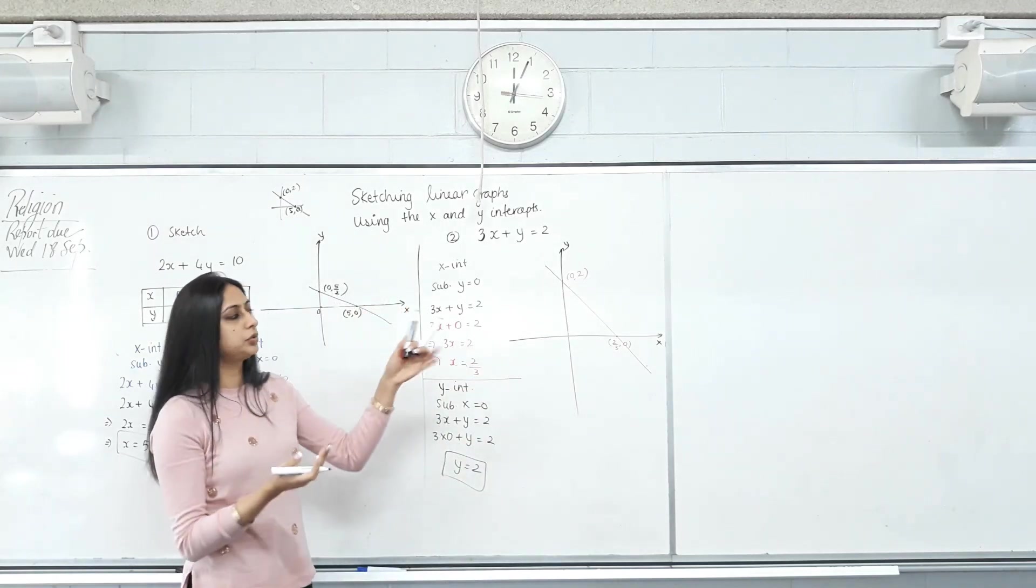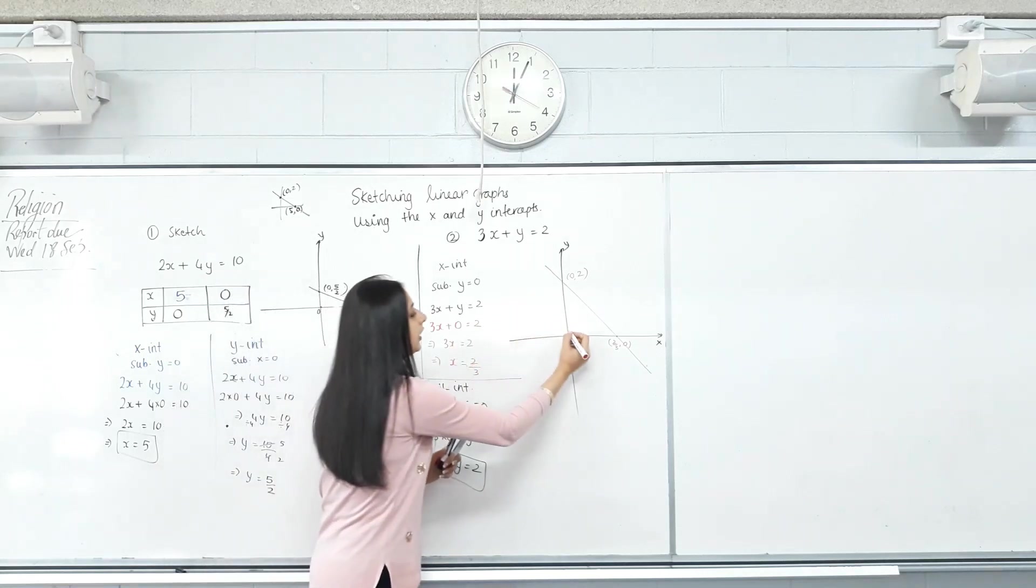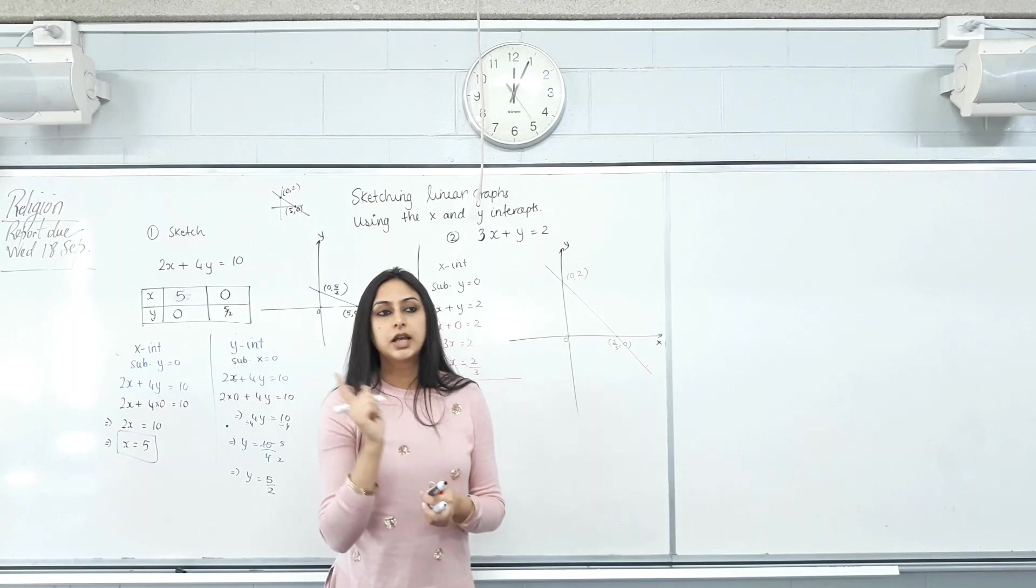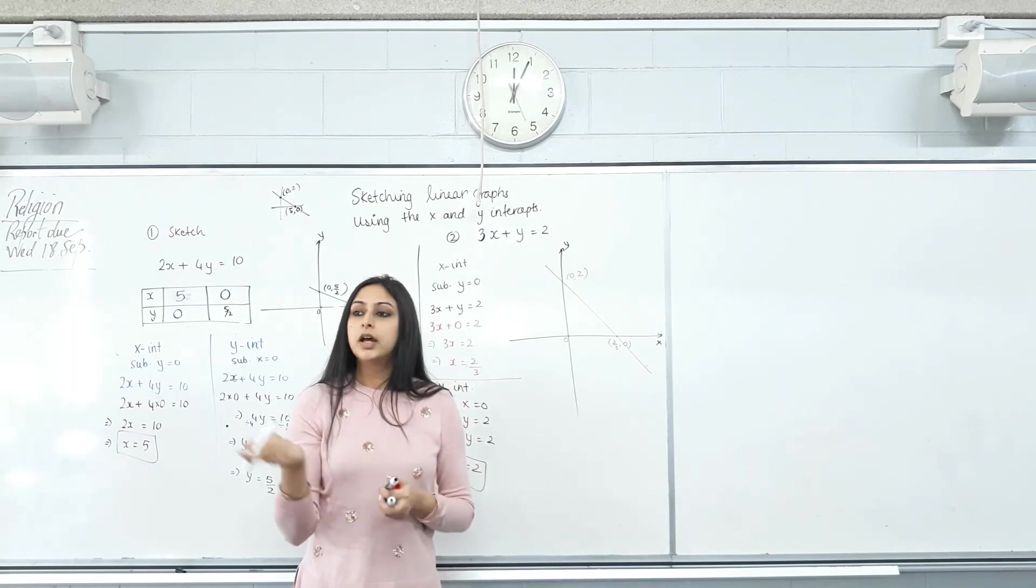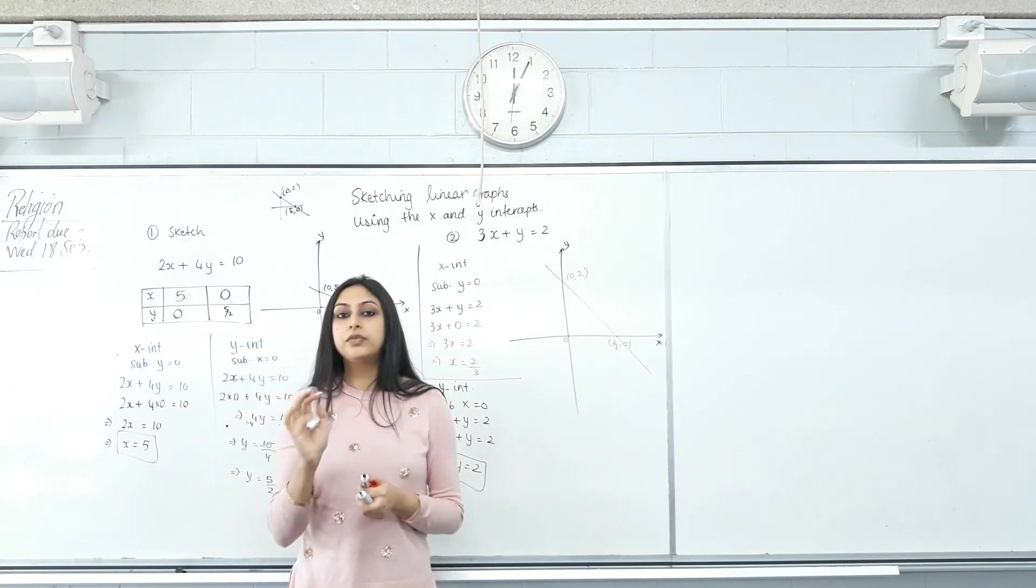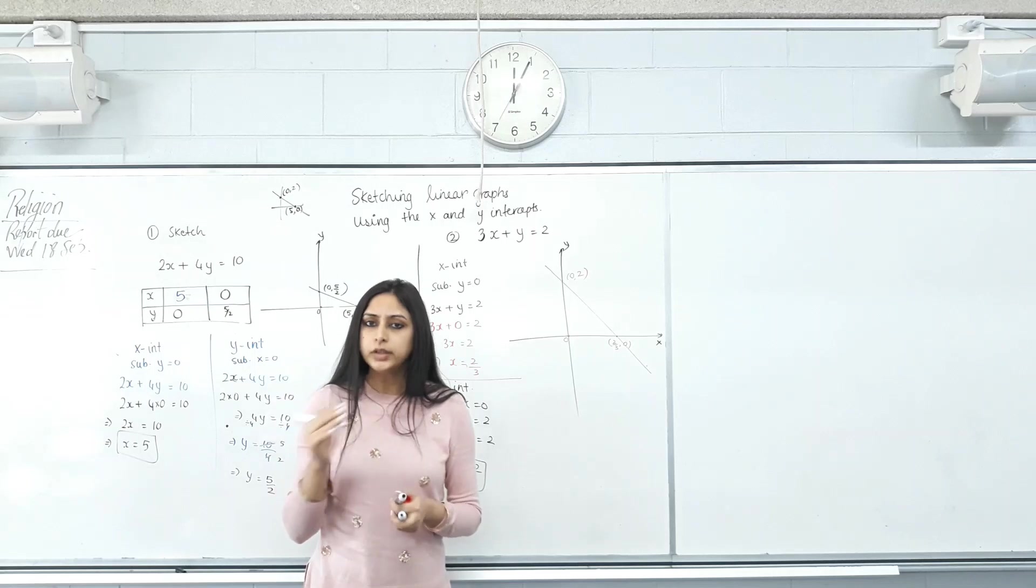It should roughly be where 2 should be. Right? Don't need to put in any other values, and you sketch any equation using X and Y intercepts. Now, the method that I taught you last lesson using gradient and Y intercepts, you only use that method if it specifically asks you.